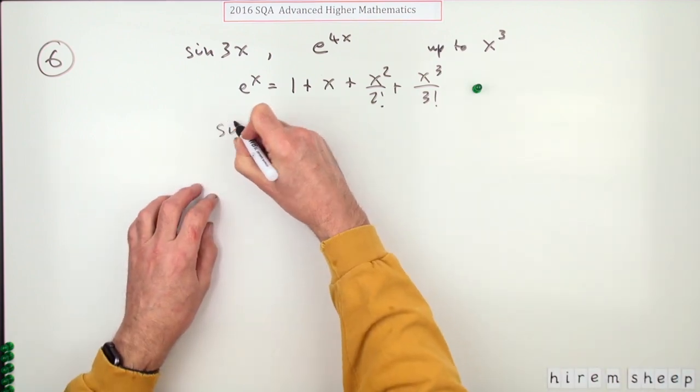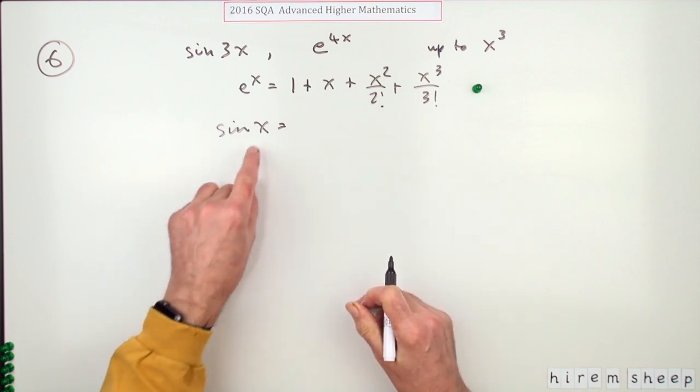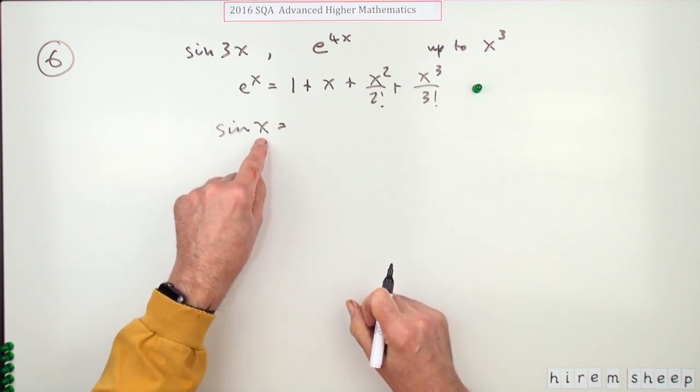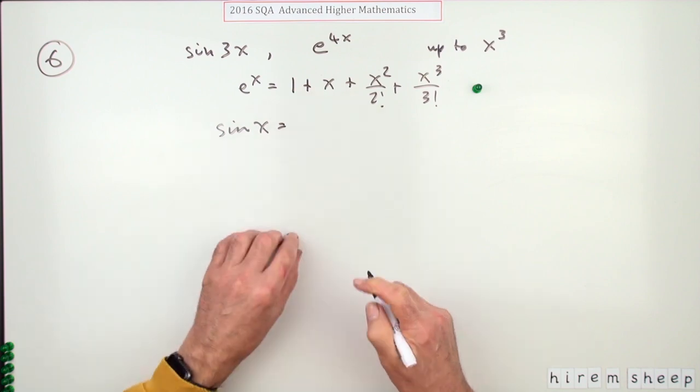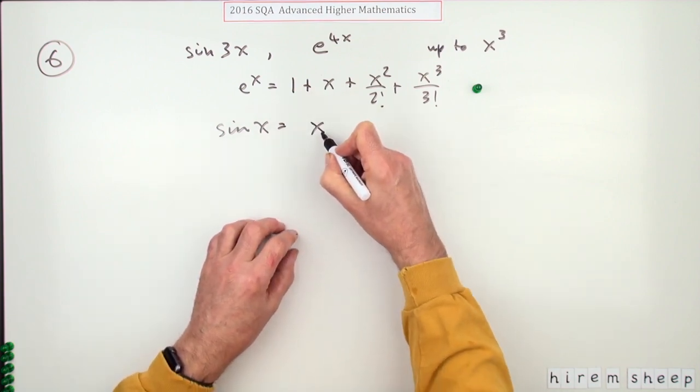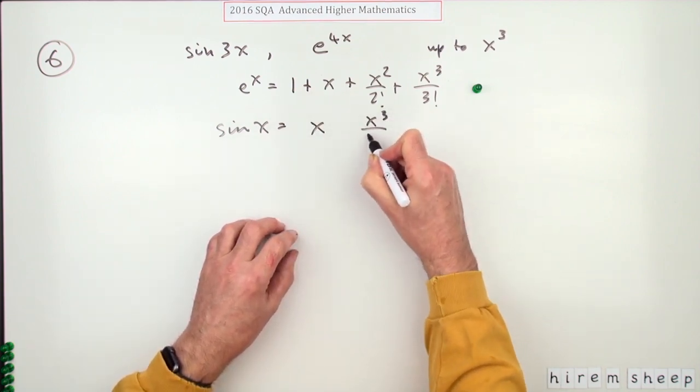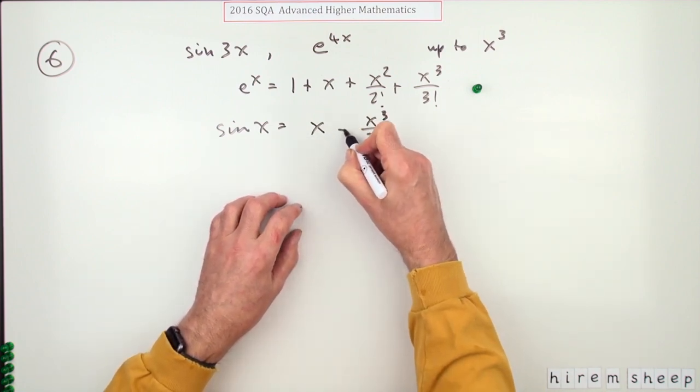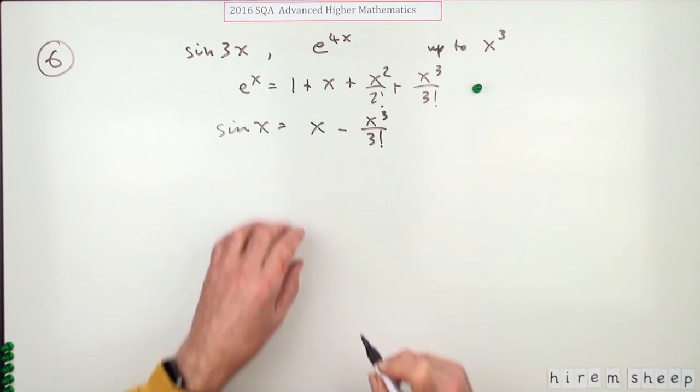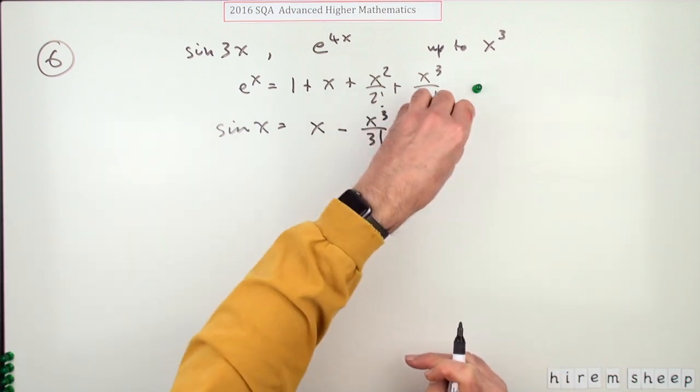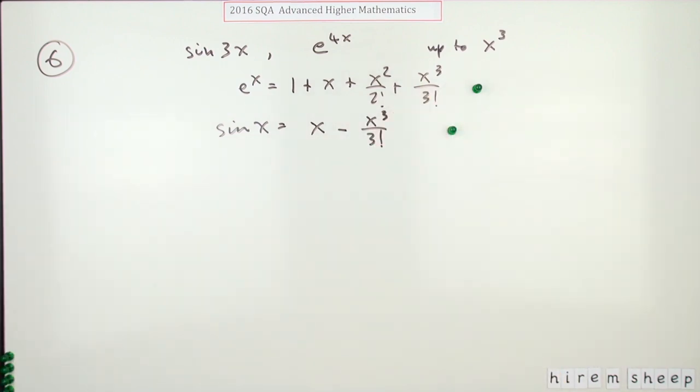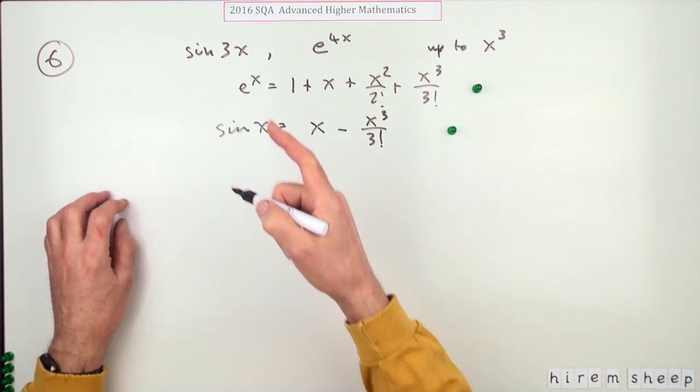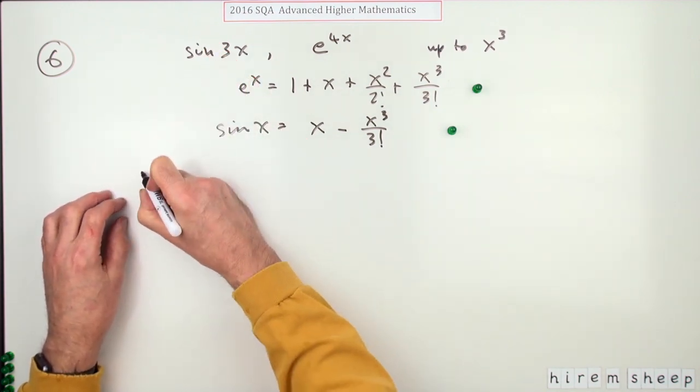And from that, sine of X, remember X starts, sine of 0 is 0, so it's not going to start at 1. So it starts at X and then it's alternate terms. It'll be the X and the X cubed over 3 factorial, and they go alternate positive, negative, positive, negative. And if you did that, that would get you a mark. So the two things they're looking for was find an expansion for sine 3X.